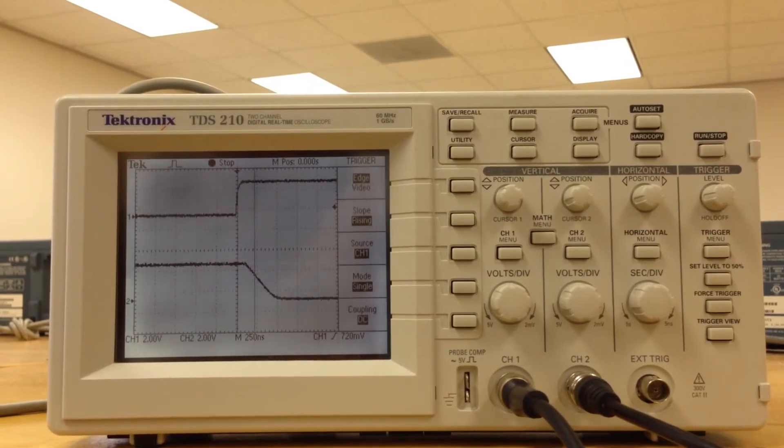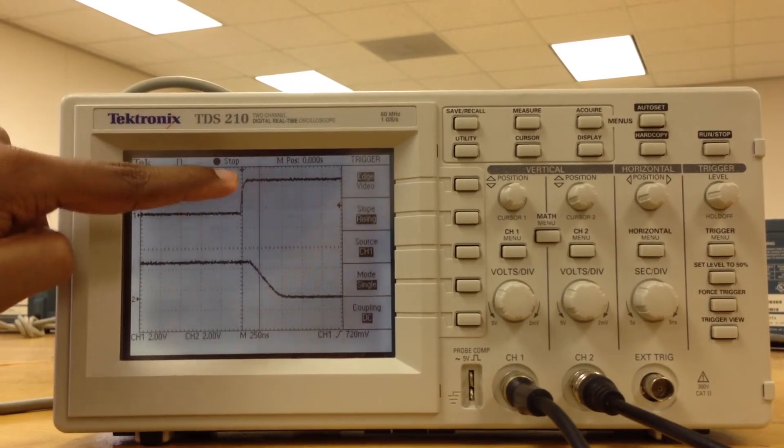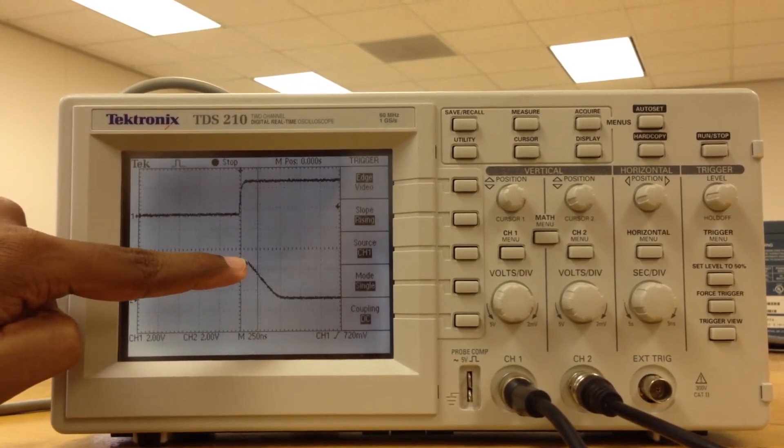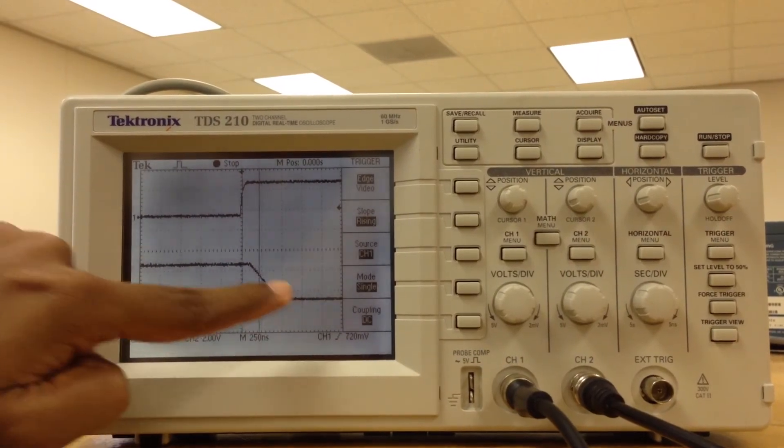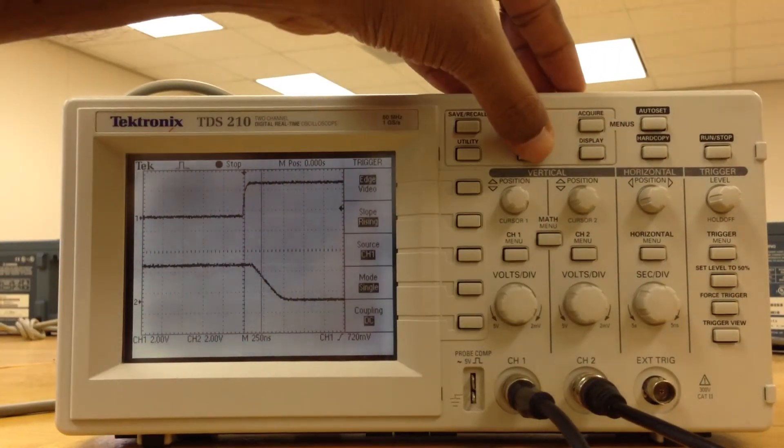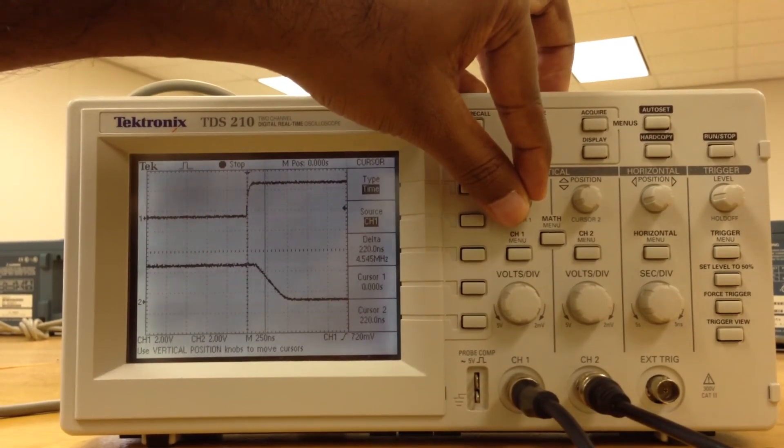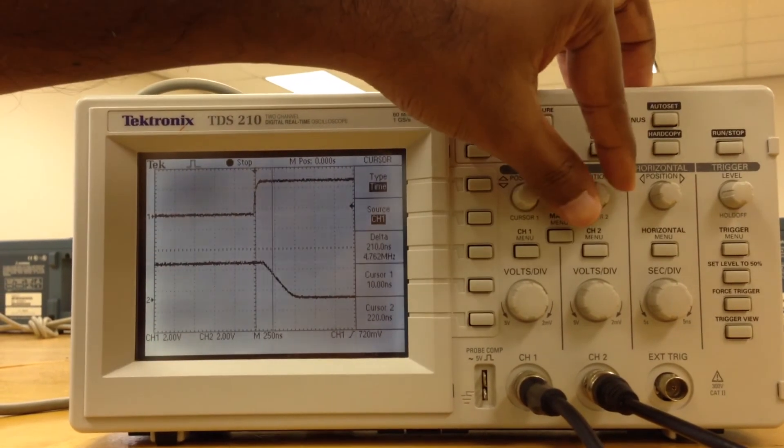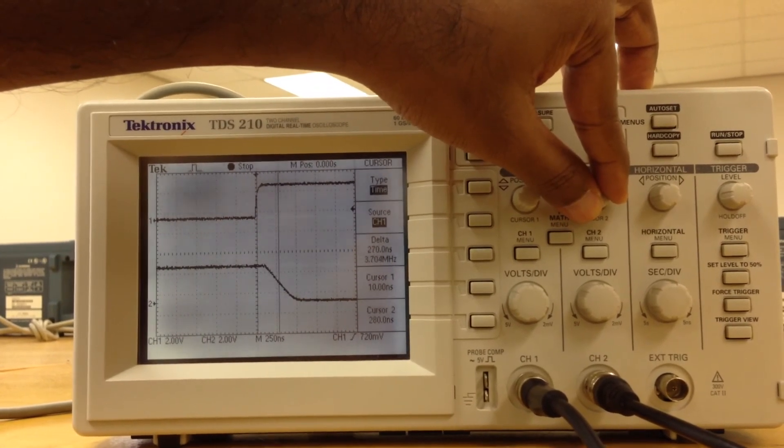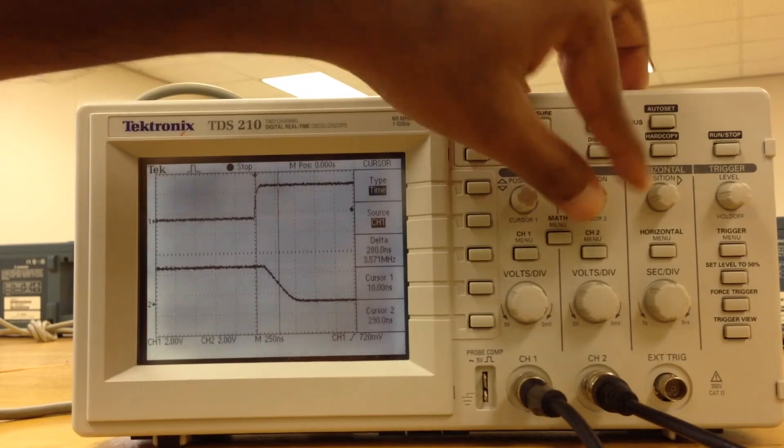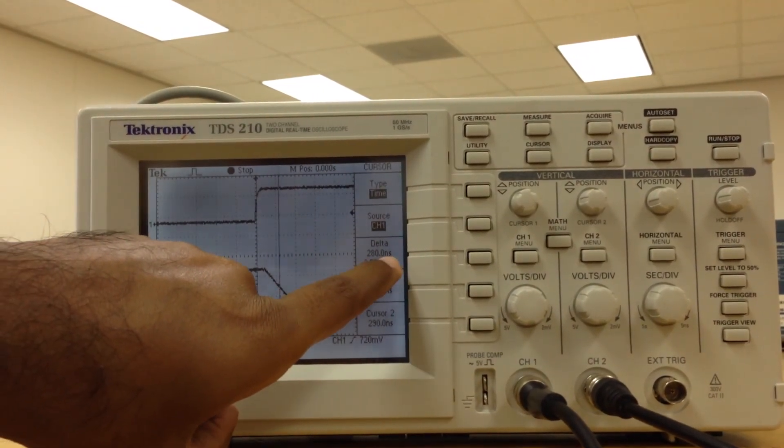As you can see, clock is rising and the output is falling from Q equal to 1 to Q equal to 0. To measure this, again press cursor and move the cursor to the middle of the rising of clock and to the middle of the falling of Q. You can measure the delta as 280 nanoseconds.